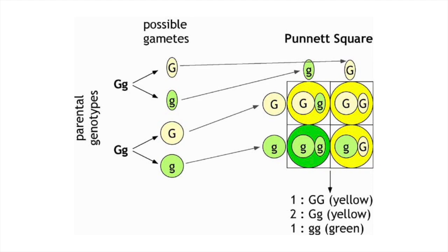It's going to get cumbersome really fast. Because when we start thinking about dihybrid crosses, that Punnett square has to become four on a side. Suddenly there are 16 little boxes you have to fill in and 16 little boxes you have to count. That makes it really easy to make errors.